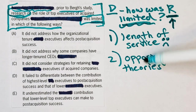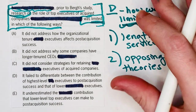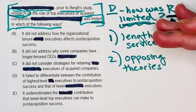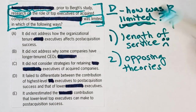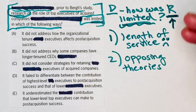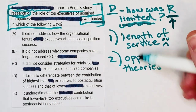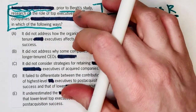So how is this research limited? Two things: one, it didn't seem to take into account the length of service of the executives. And two, there were opposing theories that explain the relationship between the executives and the successful outcomes. Either of these could be the correct answer, which is why you really need to do your due diligence. You couldn't just stop where it said 'length of service' — we had to notice that they said there were two limitations.